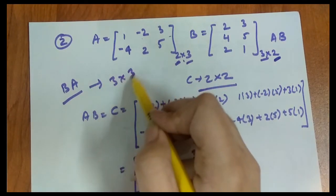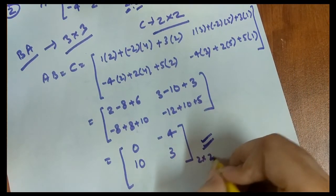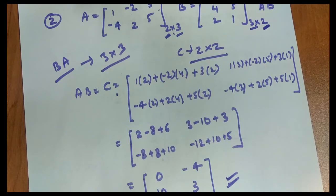Now AB matrix order was 2 cross 2. Now this is 3 cross 3. You can see that matrix multiplication is not commutative. The orders are different. If the orders were the same, then we would consider the elements and check if it is commutative or not. But when the orders are not the same, you know that AB and BA are not the same.